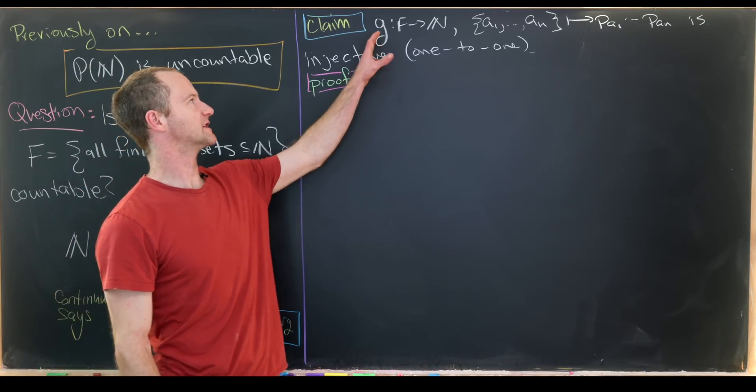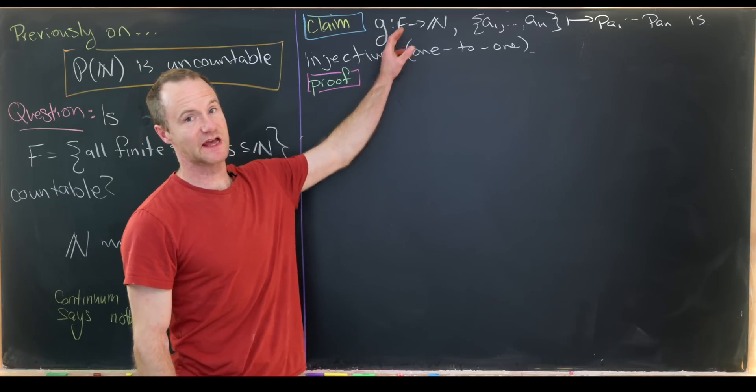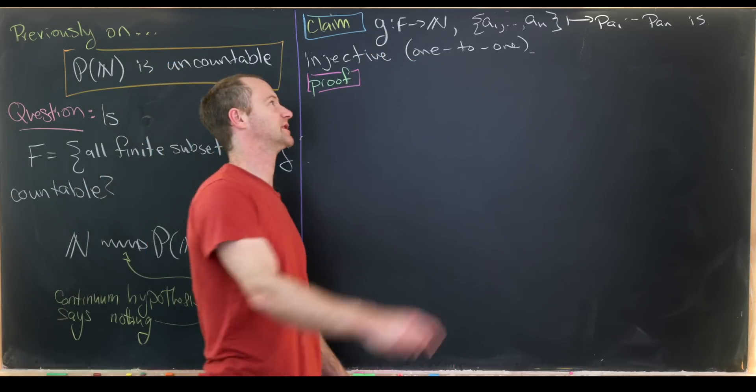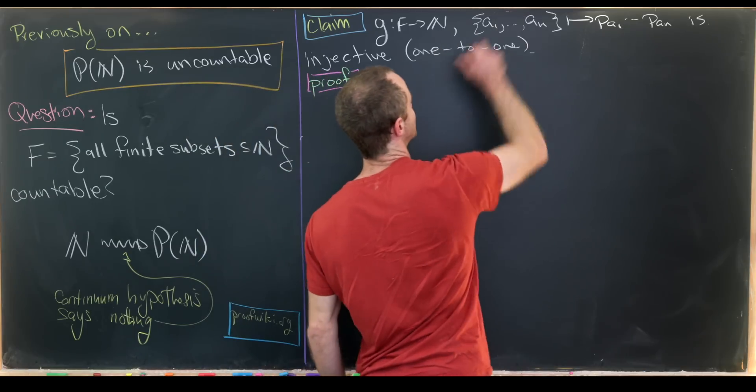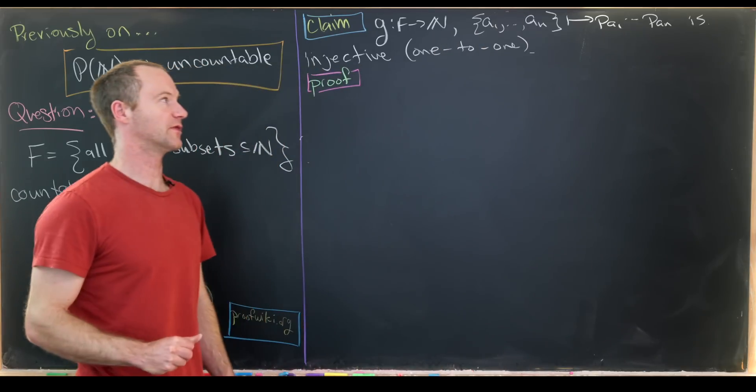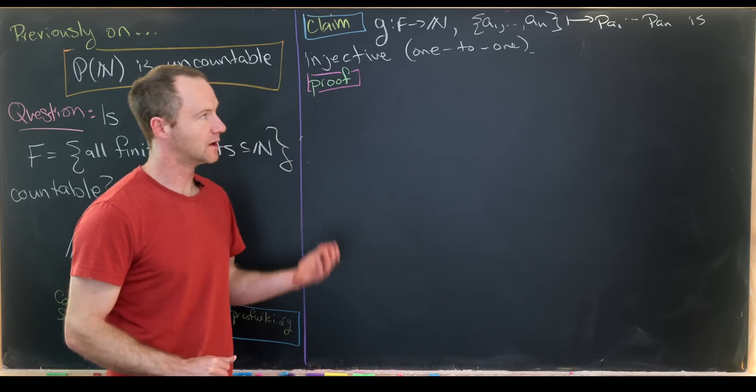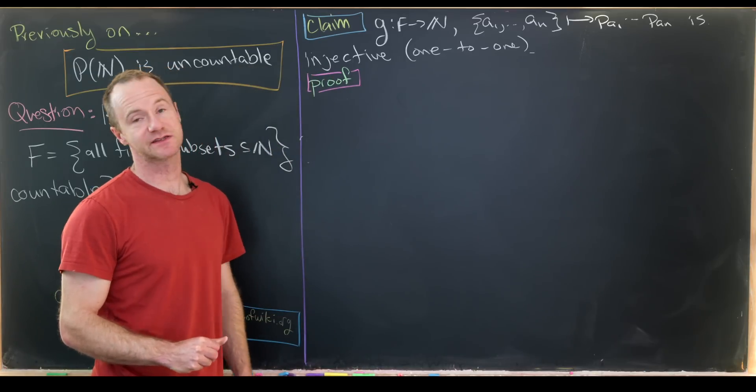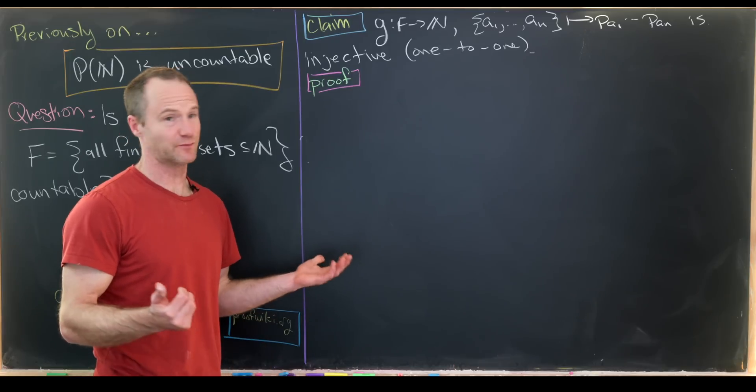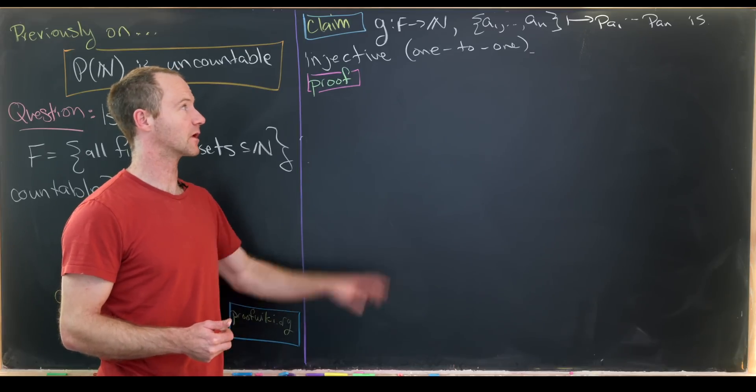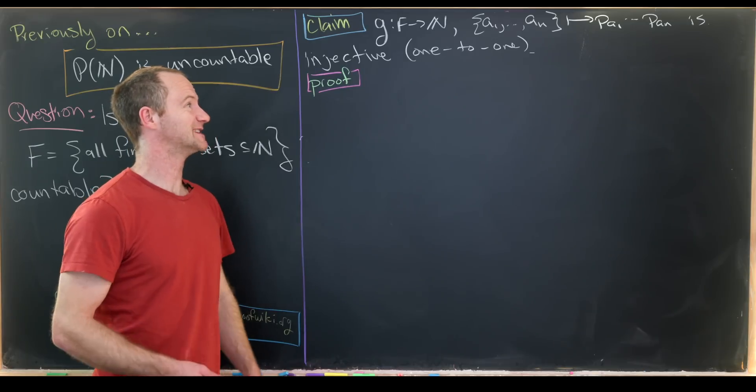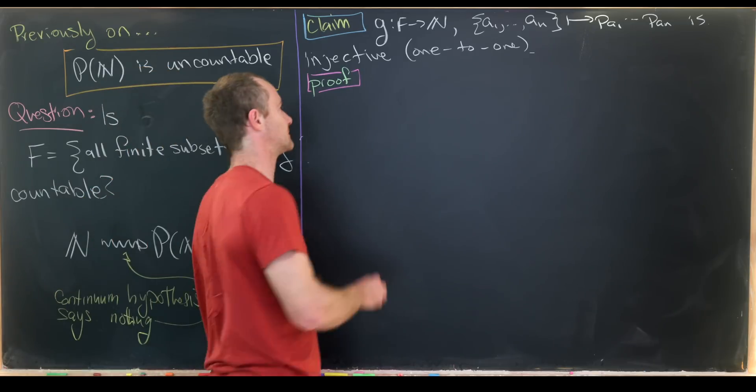Let's recall that we defined this function G from the set of all finite subsets of natural numbers to N. It took the finite subset {A1, ..., A_N} to the product P_{A1} × ... × P_{A_N}, where those are the prime numbers we talked about before.